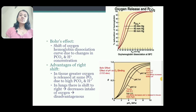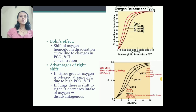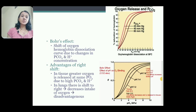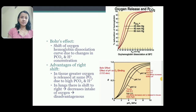Bohr's effect is the shift of the oxygen-hemoglobin dissociation curve due to changes in partial pressure of carbon dioxide and H+ ion. When carbon dioxide and H+ ion increase, there is shift to right. When carbon dioxide and H+ ion decrease, there is shift to left.